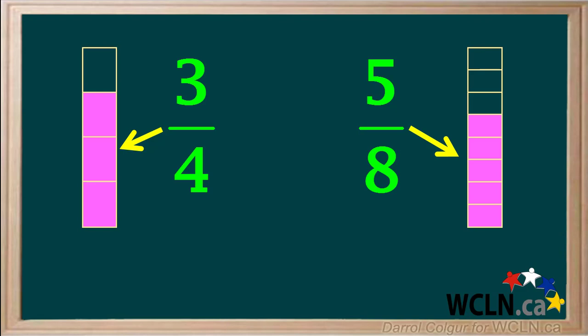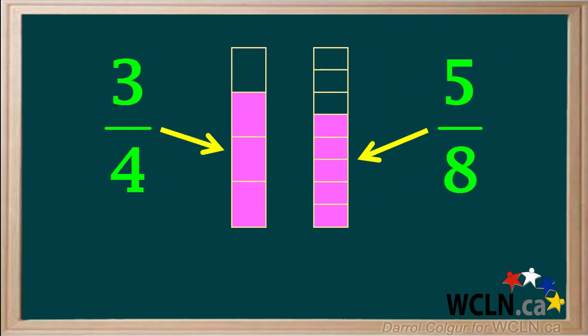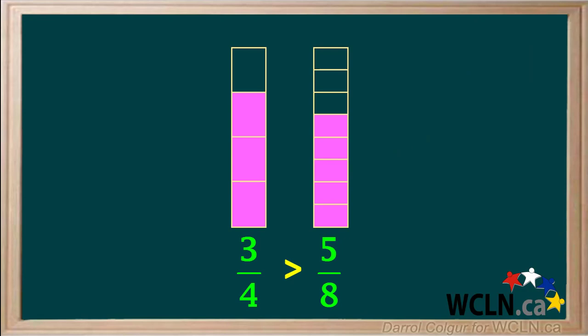Let's look at our fractions 3 quarters and 5 eighths, and we'll place them side by side. Even though the numerator 5 is greater than the numerator 3, we see that the fraction 3 quarters is actually larger than the fraction 5 eighths.